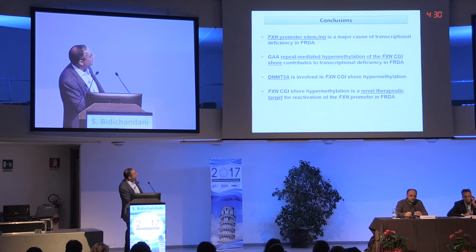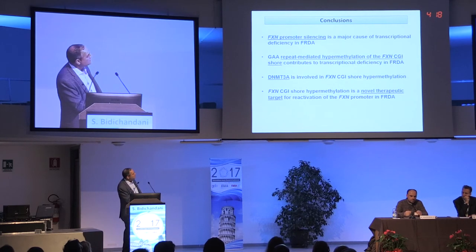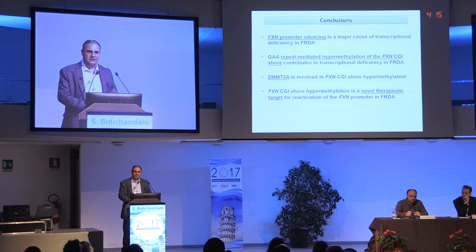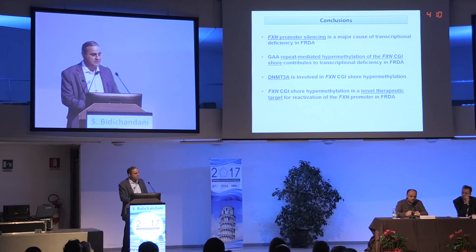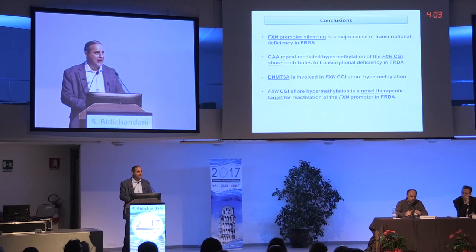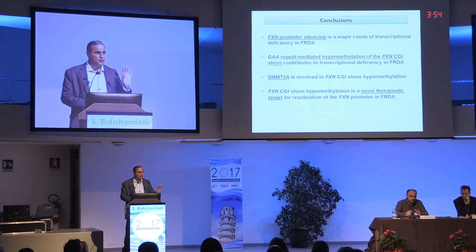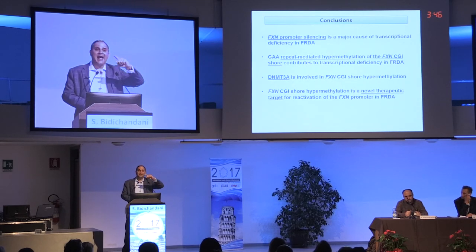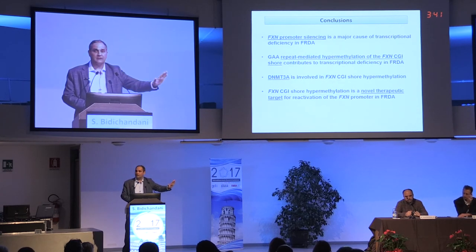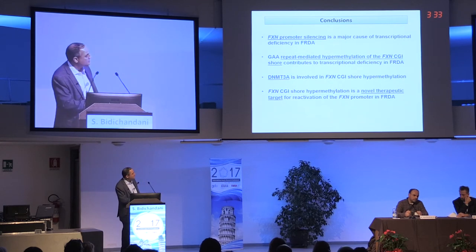To conclude: frataxin promoter silencing is a cause for transcriptional deficiency in FA, and repeat-mediated hypermethylation of the CGI shore is a new target. DNMT3A seems to be a mediator of this methylation — we don't know if it's the only mediator, but it's certainly important. This establishes yet another target, and perhaps the need for targeting both repressive chromatin and this methylation signal together. There's also published literature for other genes where repressive chromatin shuts a gene off and then CpG methylation comes on to silence it more completely — like a lock — suggesting here's another barrier to overcome in silencing of the FXN gene.